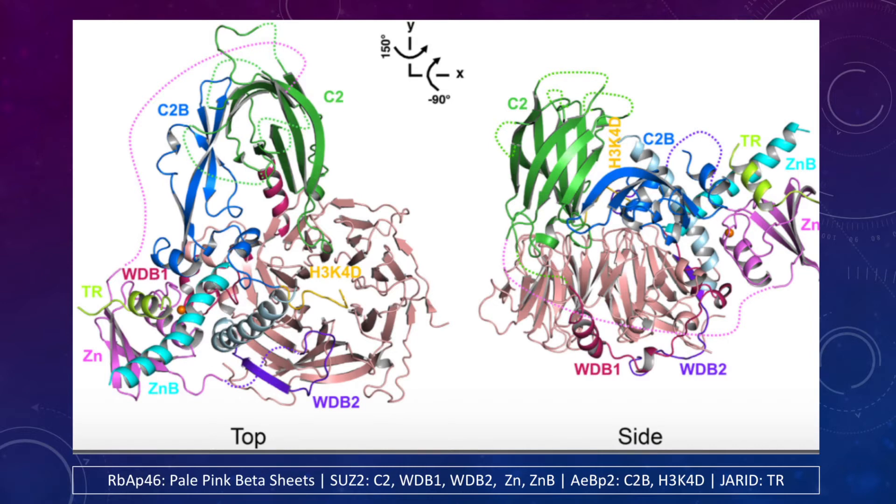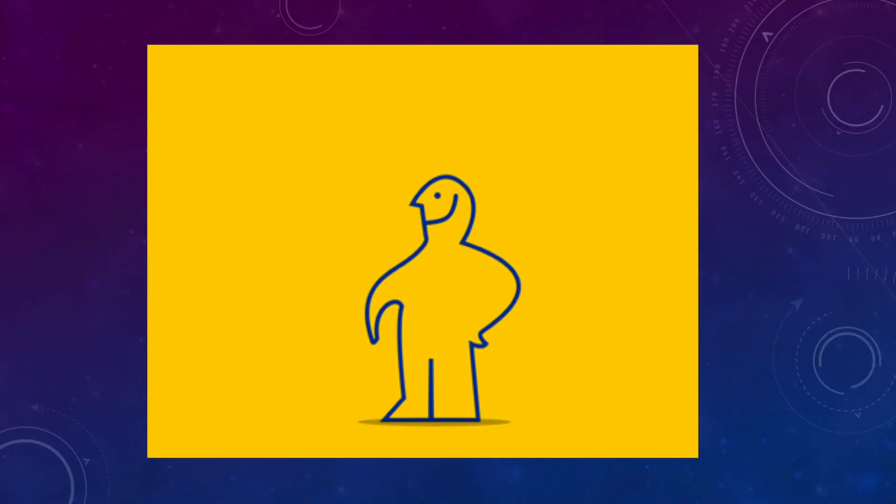SUZ2 has a zinc finger subunit which is known to facilitate protein binding to the genome target. Cofactors JARID2, AEBP2, and RBAP46 are equally important to the catalytic activity, but the level of dependence is unknown. Again, further investigation is needed to concretely determine the biochemistry of this protein.